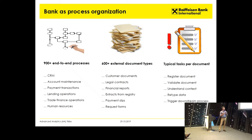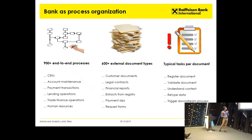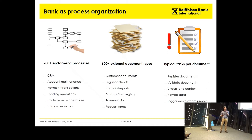Just imagine the bank as a process organization. How can we approach this as a process organization? A typical bank would have over 900 end-to-end processes, including both internal and external ones. If we aggregate all the processes, all of them operate on over 600 external document types, which are, to a large extent, manual processes at the moment.